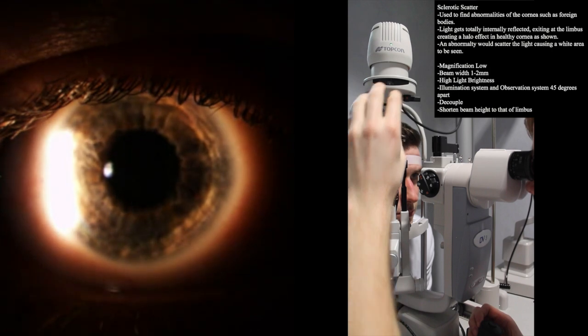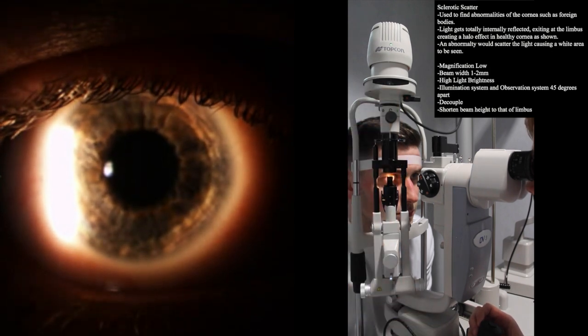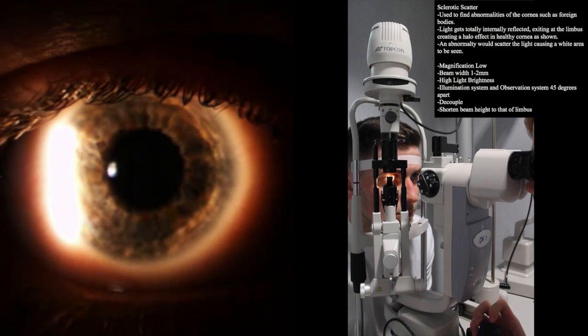The light is totally internally reflected in a healthy cornea and exits at the limbus, creating a halo effect which can be seen here.